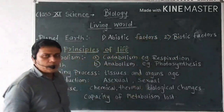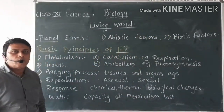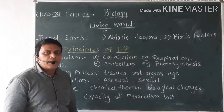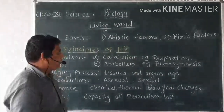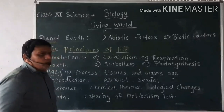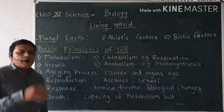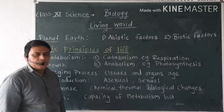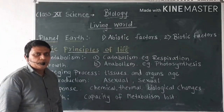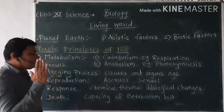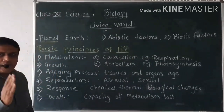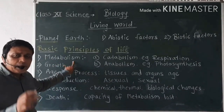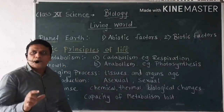Living organisms which show different life processes come under biotic factors. So our Earth consists of two main factors: abiotic factors and biotic factors. Now, living organisms show some basic principles of life. The first basic principle of life is metabolism. Metabolism is a process which occurs only in living organisms — these are the different biological processes which occur in living organisms.